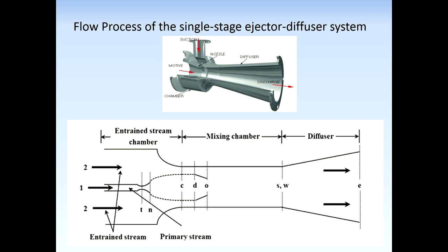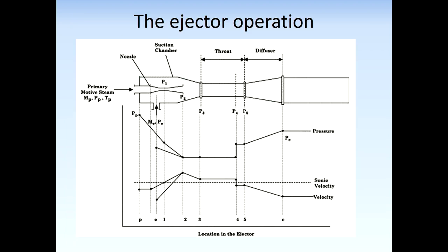A normal shock occurs in the constant diameter section, which increases pressure from supersonic to subsonic. Here is the diagram of pressure and velocity: through the nozzle is the isentropic part, then a normal shock wave occurs where pressure increases and velocity decreases from supersonic to subsonic. The dashed line represents the sonic velocity line.